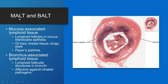MALT stands for mucosa-associated lymphoid tissue, and you find mucosa in your digestive tract and urogenital tract. These are lymphoid follicles in the mucous membrane of the epithelial GI tract, breast tissue, lungs, eyes, and Peyer's patches in the small intestine. BALT is bronchus-associated lymphoid tissue — lymphoid follicular structures in the bronchi that defend against inhaled pathogens. MALT is active against pathogens found in food or water that passes through your digestive tract.